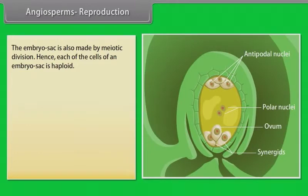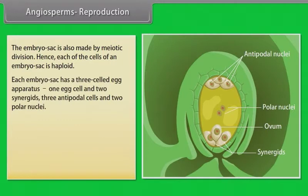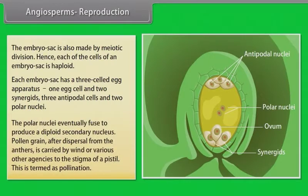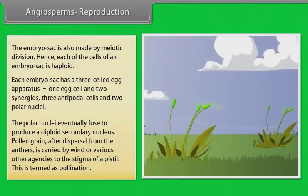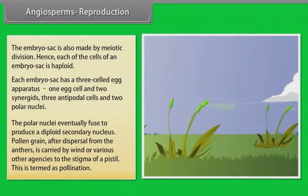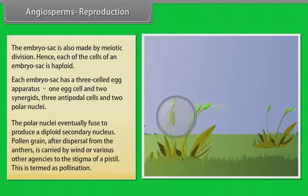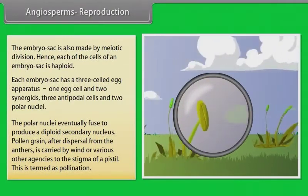Pollen grains are haploid. Each embryo sac has a three-celled egg apparatus: one egg cell and two synergids, three antipodal cells and two polar nuclei. The polar nuclei eventually fuse to produce a diploid secondary nucleus. Pollen grains after dispersal from the anthers are carried by wind or various other agencies to the stigma of a pistil. This is termed pollination.